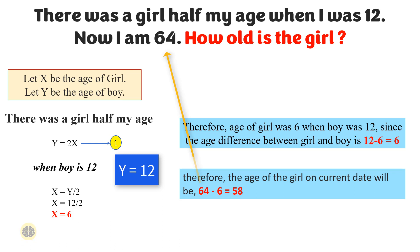By following these simple steps, it is easy to find the solution accurately. In summary, the problem involves using algebraic equations to relate different pieces of information and solve for an unknown variable. By doing so, we can determine the age of the girl based on the information provided in the problem.